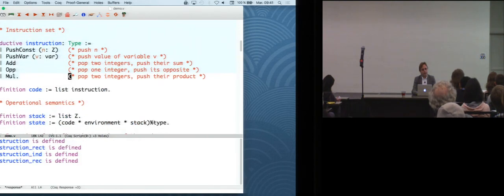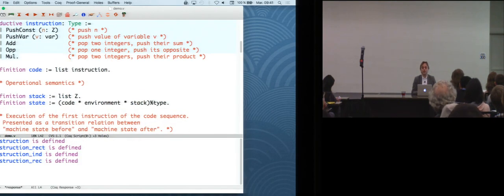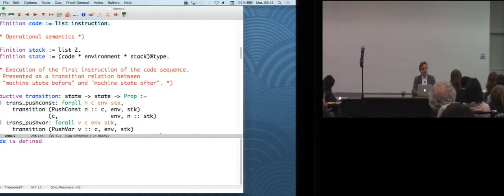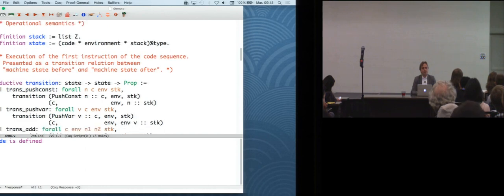All right, so and then what is the code for this machine? It's just a list of instructions, right? So what kind of semantics are we going to give to that? Well, it's a machine. So machines execute one instruction at a time, right? And that changes their state. So the state of our machine is a triple. There is a code, a list of instructions that remain to be executed. There's an environment giving values to variables. And there's a stack, which is just a list of integers. OK, so pushing on the stack. The top of the stack is the head of the list.